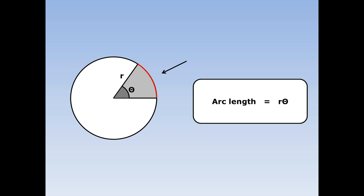The arc length of a sector of a circle with radius r and angle theta, where theta is in radians, is r theta.